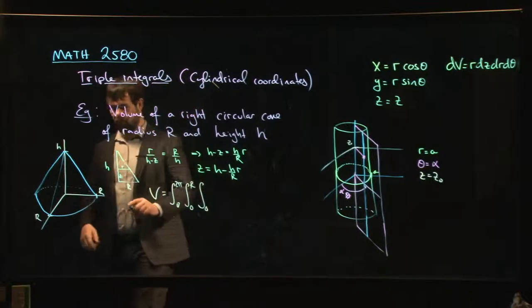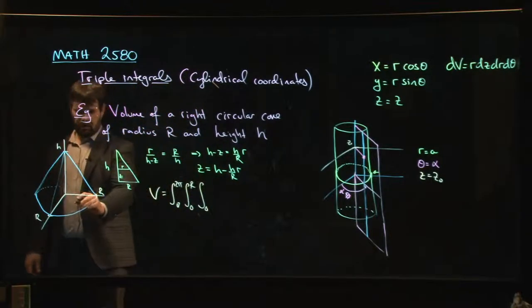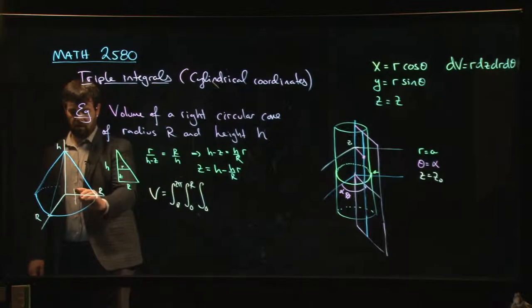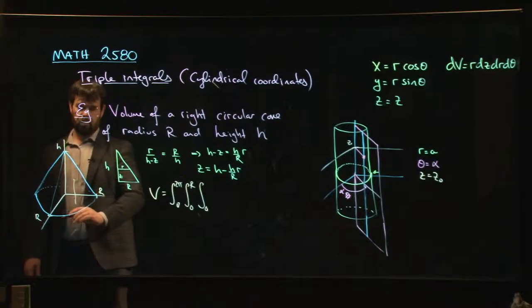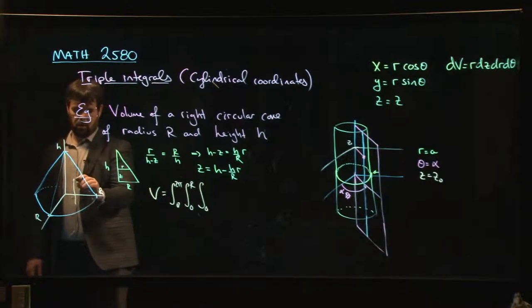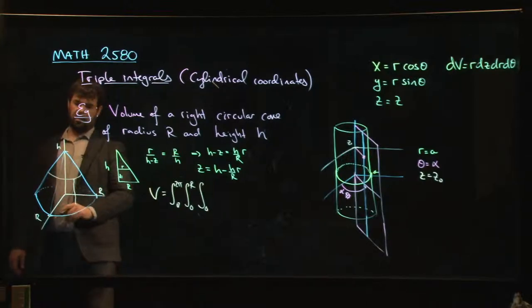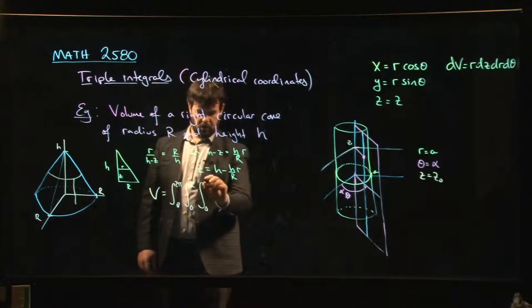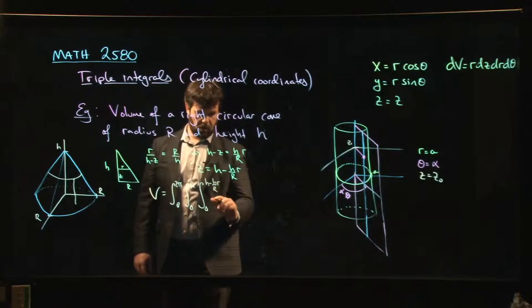Z goes from 0, right, the XY plane, up until we hit the cone. If we're thinking about choosing a point on the disk and then looking at the range of Z, the value Z starts here in the XY plane and we go up until we hit the cone, right, until we hit that point on the cone corresponding to that particular Z value.